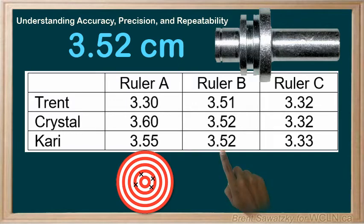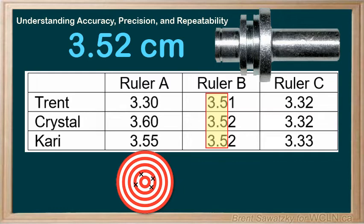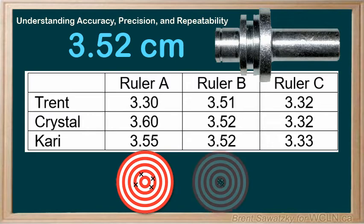Let's switch to ruler B. It had a precision of one millimeter, and we can see the results look much better. We can also see the improved precision in the repeatability of these results. Everyone agreed with the first two digits — the third digit, in the hundredths spot, is the only variation. So in this case, everybody was precise and accurate. Ruler B, using our target analogy, would look like this: easy to repeat and nicely accurate.